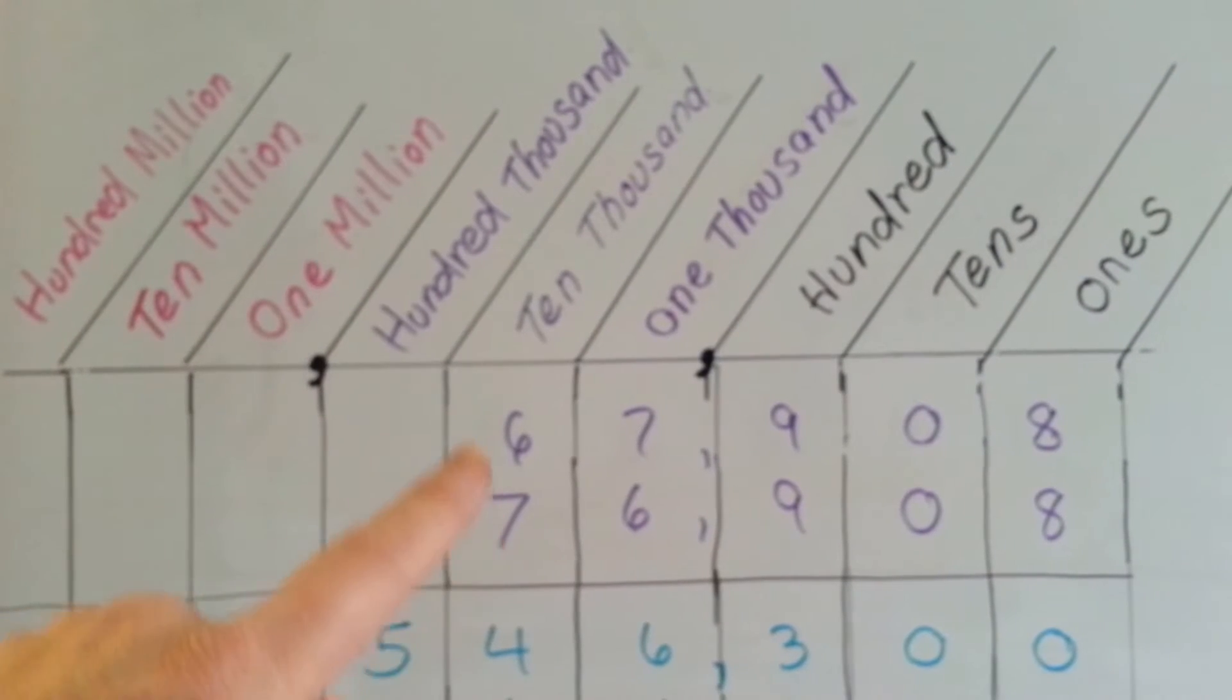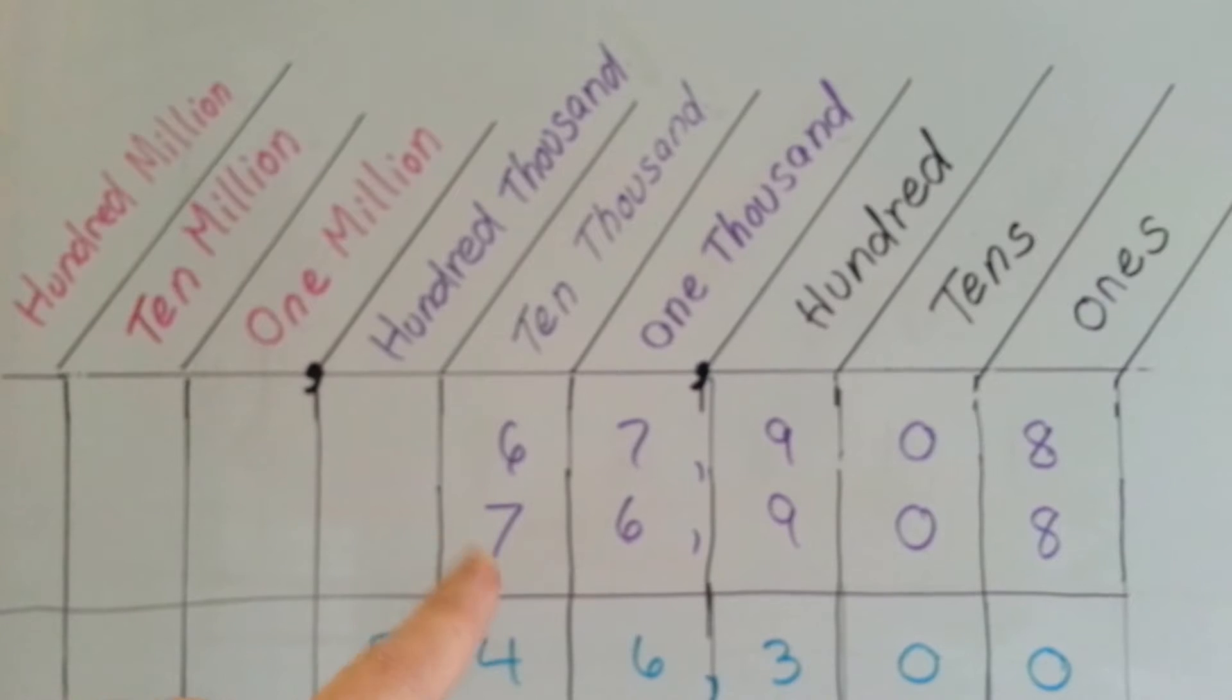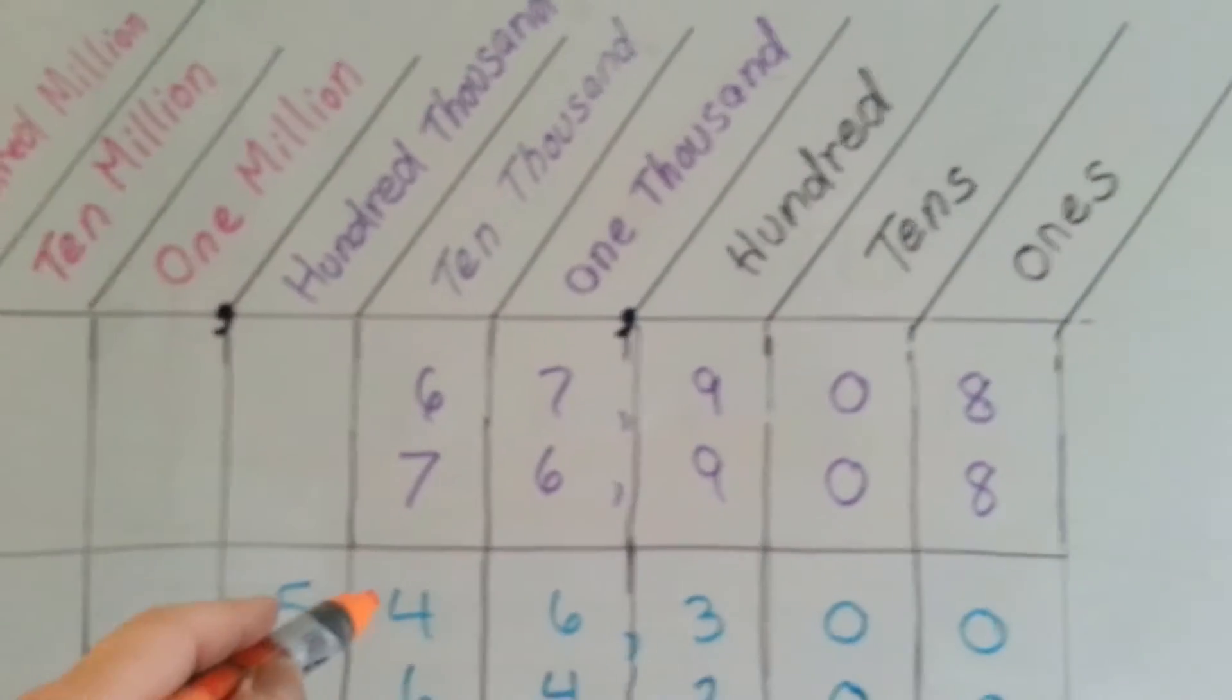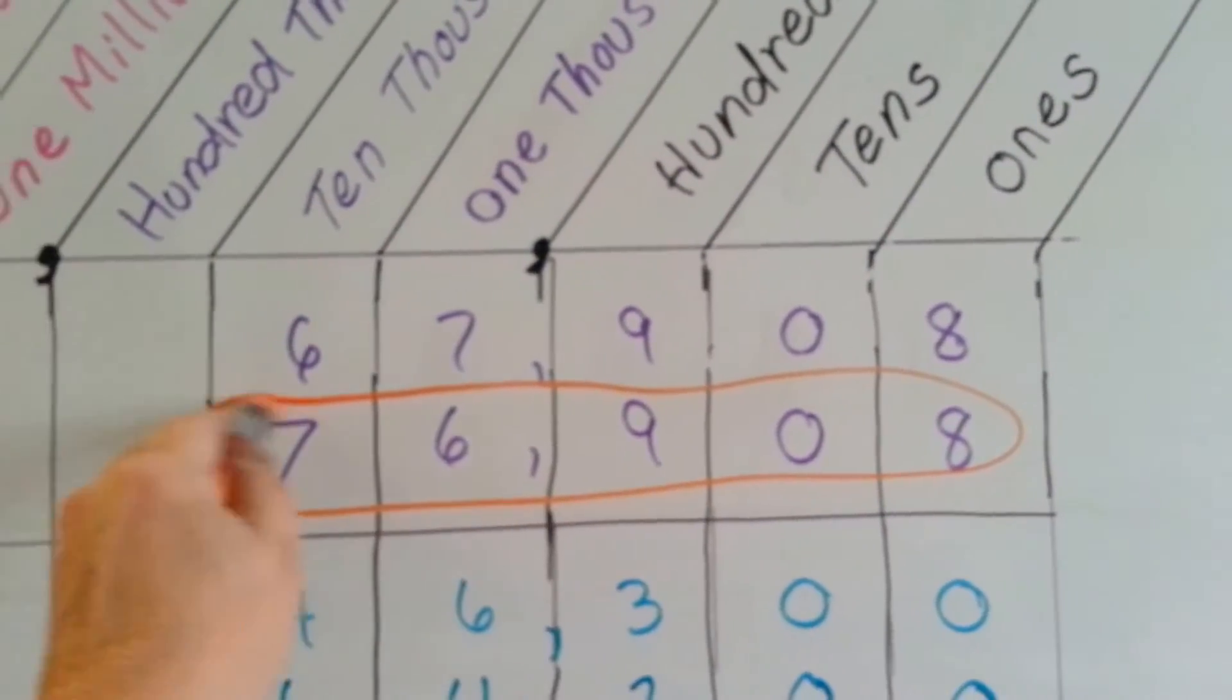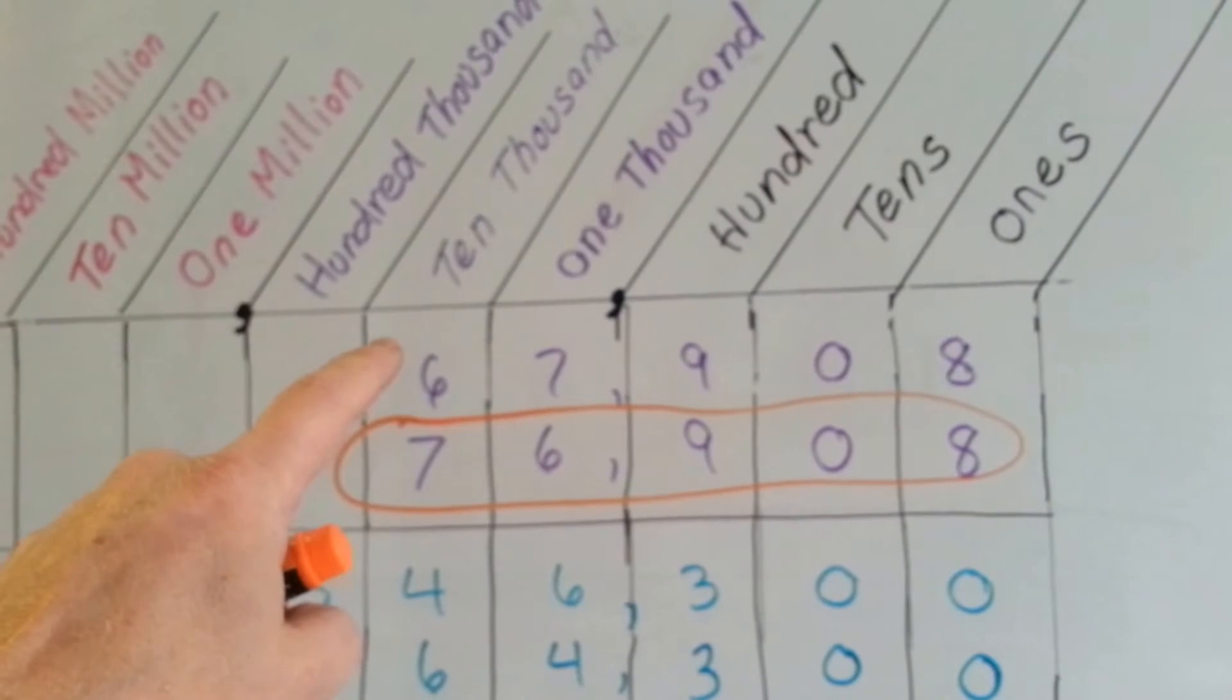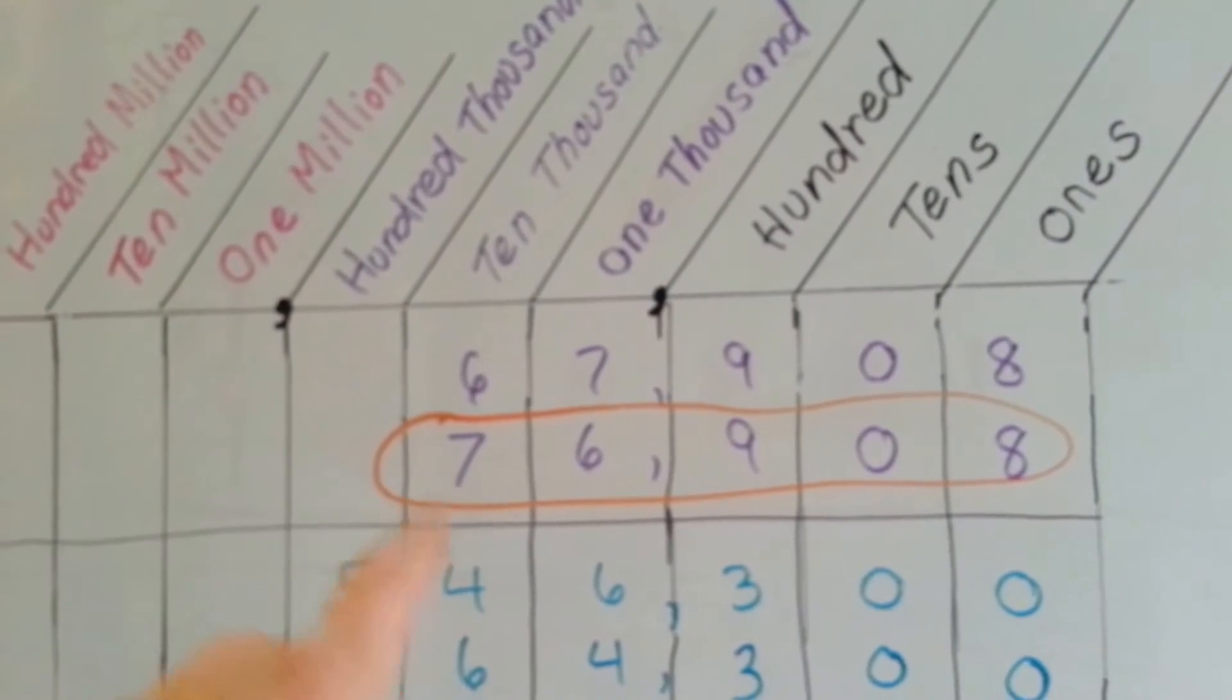So whichever number on the left is bigger is the one that has the bigger place value. This one's got a 7 in the 10,000th. This one's only got 6. So if you said this one is the bigger number, you're right. This one is 76,908. The one above it is 67,908. 67 is not as big as 76.